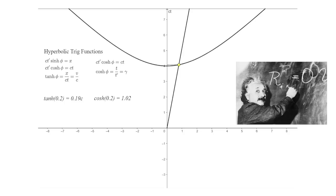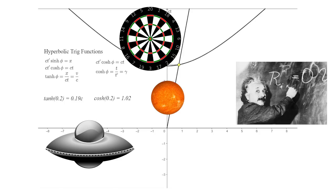Accelerating changes your hyperbolic angle, your orientation in spacetime, relative to UFOs, stars, dartboards, and everything else.